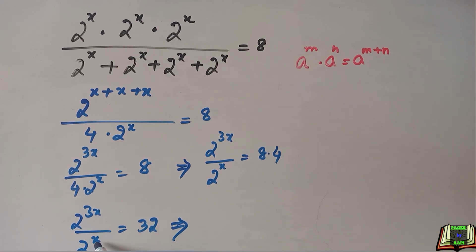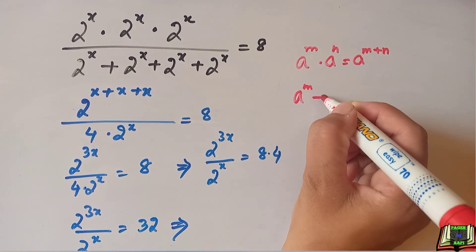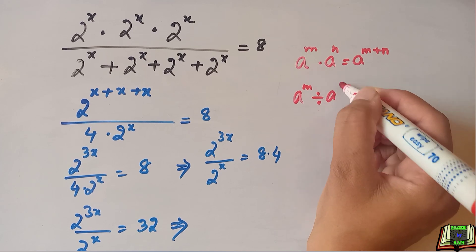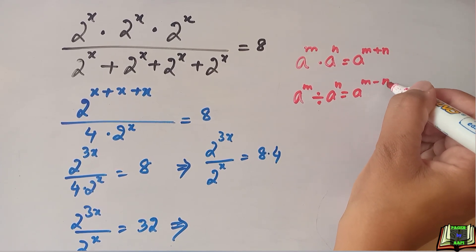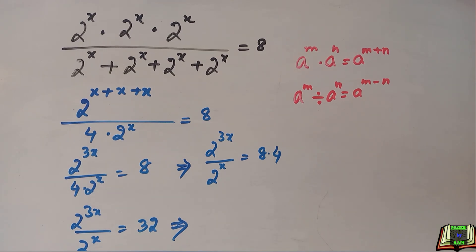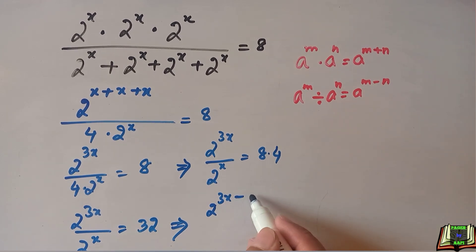So we can subtract the powers if they are dividing using the quotient rule of exponent that says if a raised to power m divided by a raised to power n, then this is nothing but a raised to power m minus n. So that will be written as 2 to the power 3x minus this 1x is equal to 32.